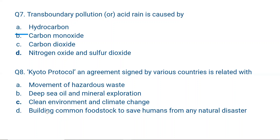Question number 7 relates to transboundary pollution. Acid gases released from one country — say India — may cause acid rain in another country like Nepal or Bhutan; this is called transboundary pollution. Acid rain and transboundary pollution are caused by nitrogen oxides and sulfur dioxide. The correct answer is D — nitrogen oxides and sulfur dioxide. When water reacts with these gases in the atmosphere, it forms acids that fall as acid rain, and no country can stop it from crossing borders.